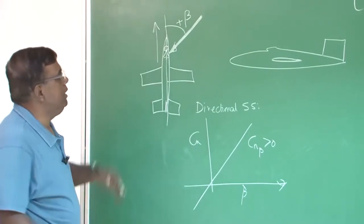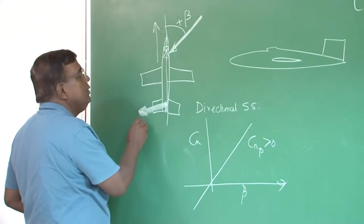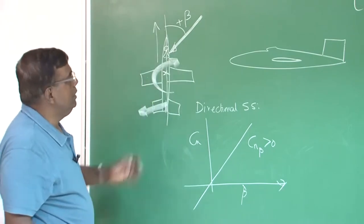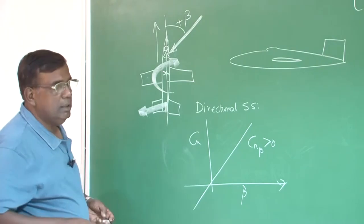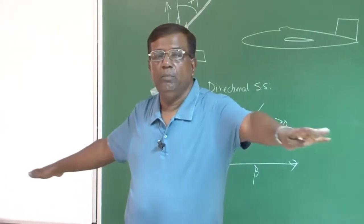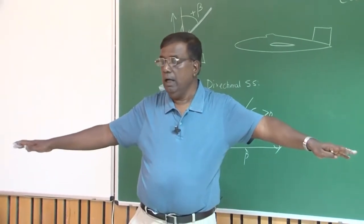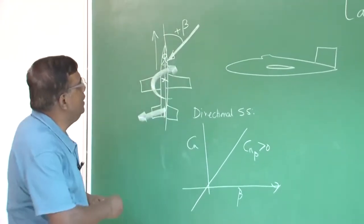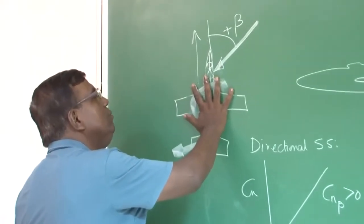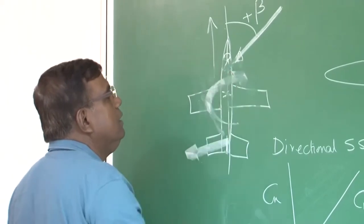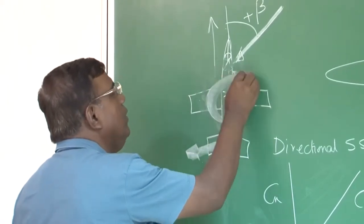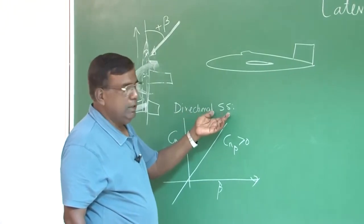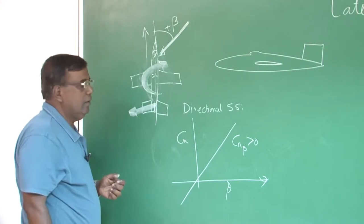How do we understand that? If there is a beta, the vertical tail will generate a force in this direction, giving a moment about the CG — a yawing moment. The sign convention is: right wing going back is positive yawing moment; right wing going down is positive rolling moment. For a positive beta, to counter this beta and have a tendency to make beta zero, the aircraft must turn toward the right — generating a positive yawing moment. That is how Cn_beta greater than zero is the condition for directional static stability, with the primary contributor being the vertical fin.